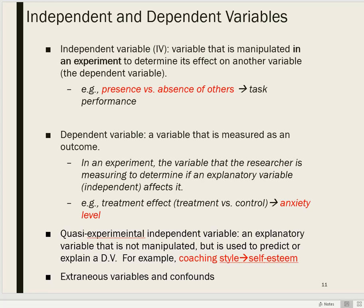One distinction that's often useful, depending on the sort of study, is between an independent and a dependent variable. An independent variable is sort of like an explanatory variable — a variable that is being used to explain another variable. A dependent variable is a variable that is being explained. In the context of an experimental design, an independent variable is a variable that is manipulated by an experimenter to determine whether or not it has an effect — the direction and strength of its effect — on another variable, which is the dependent variable.